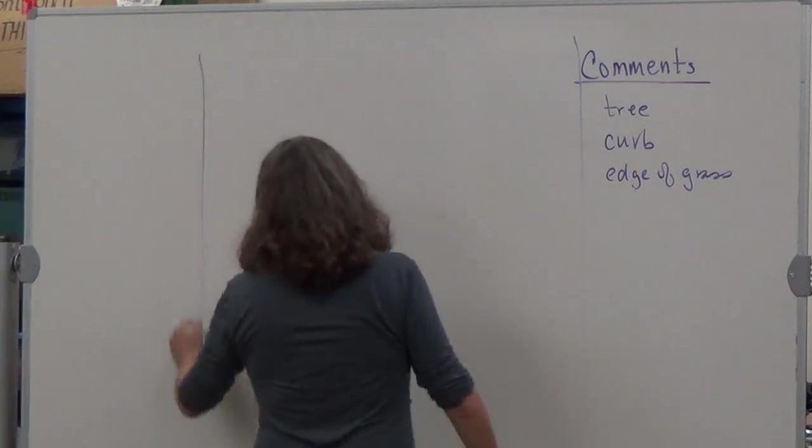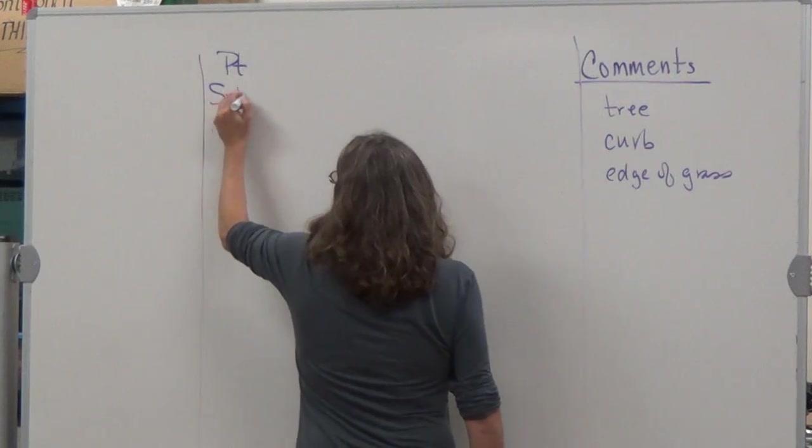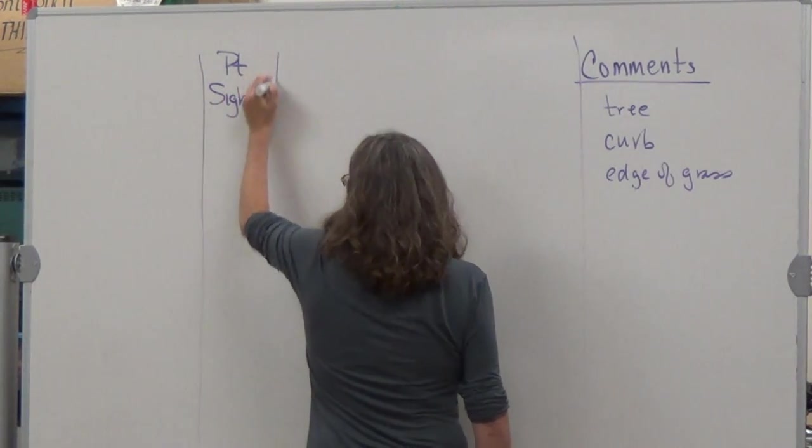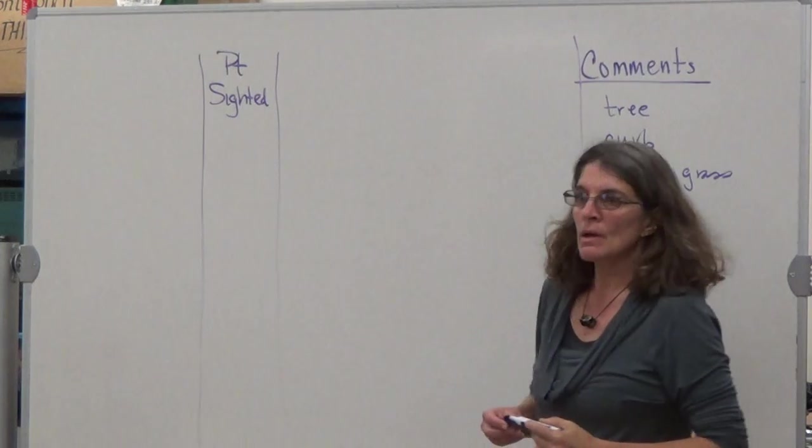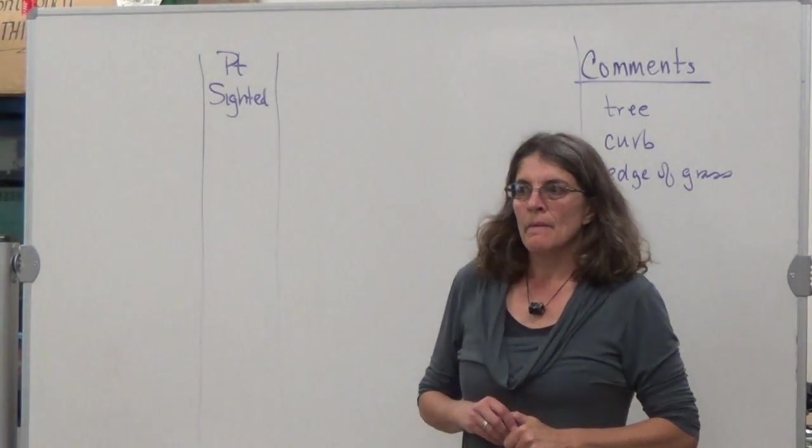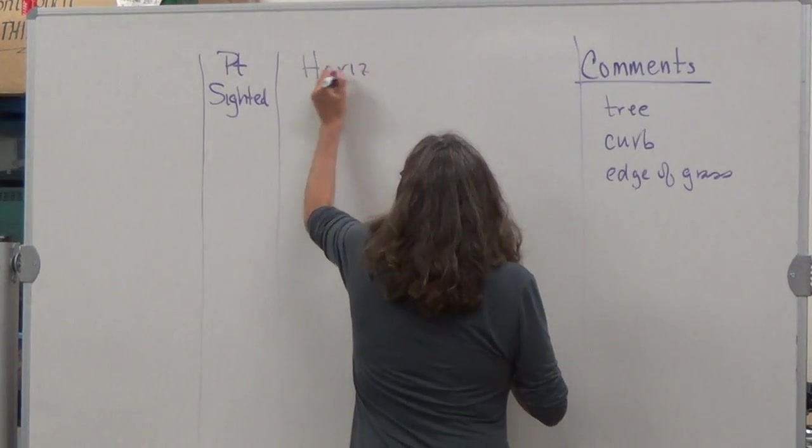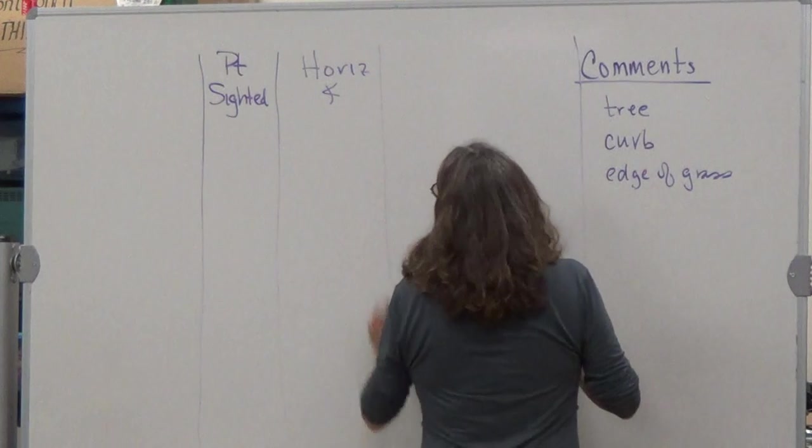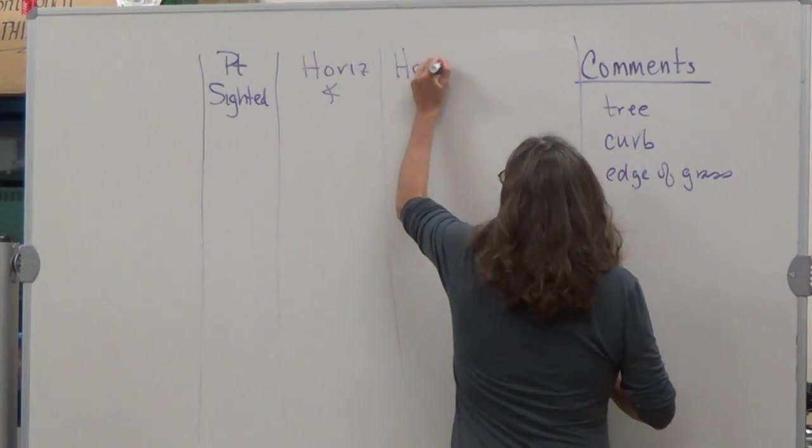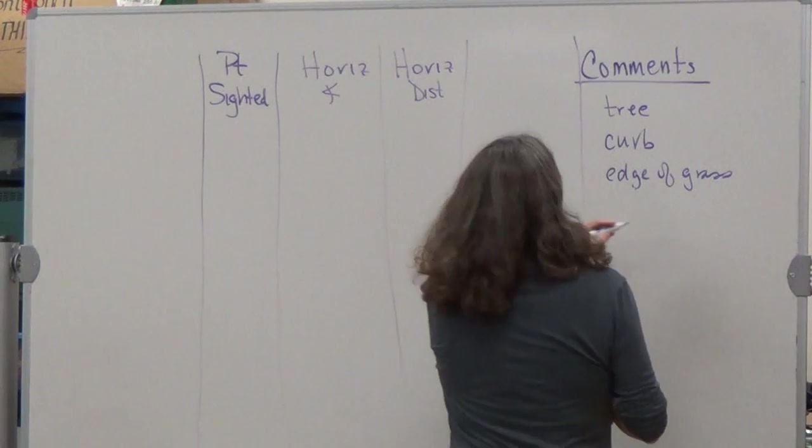So you could use this abbreviation, you don't have to write the full description out. So let's put a column, we definitely want a column for a point sighted. Then what else do we want? We want a horizontal angle, horizontal angle and horizontal distance.